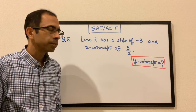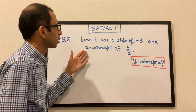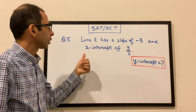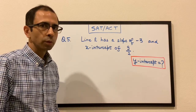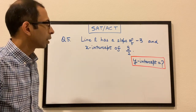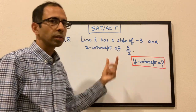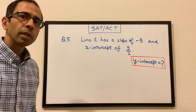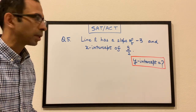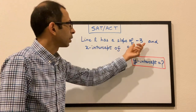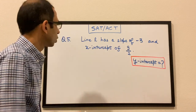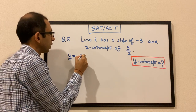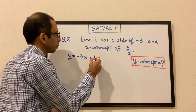Question 5: line L has a slope of −3 and an x-intercept of 9/2. We have to find the y-intercept. The standard form of a line is y = mx + b, and with slope −3, our equation is y = −3x + b.